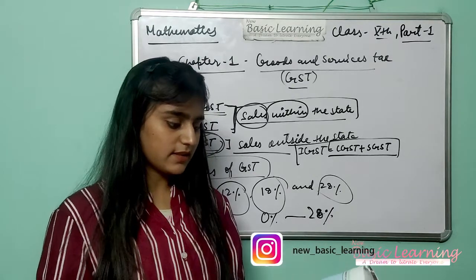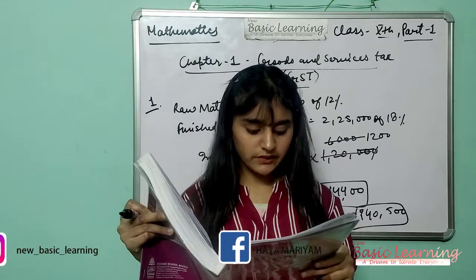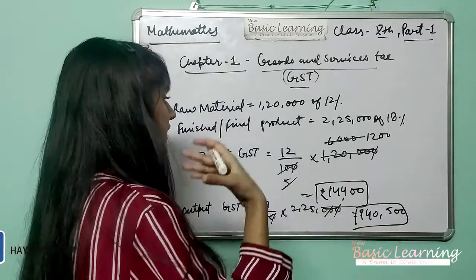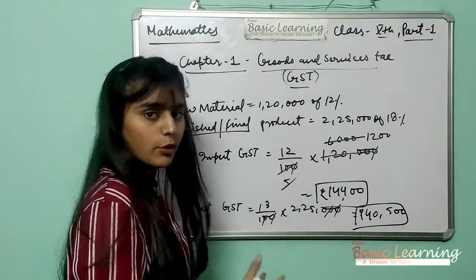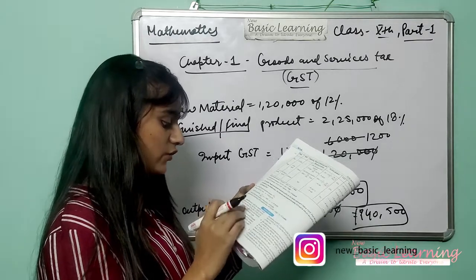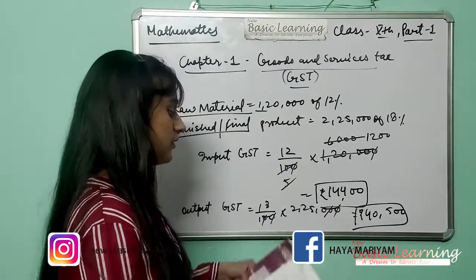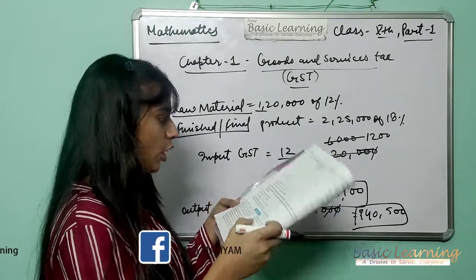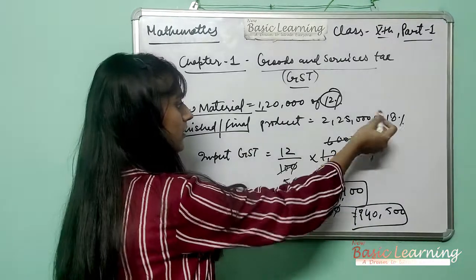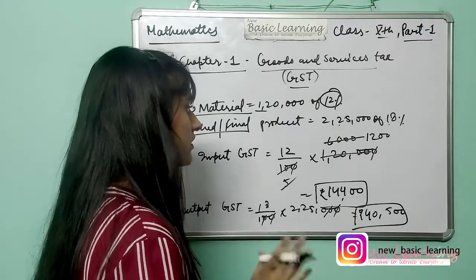The first question: Mr. Abdullah, a manufacturer, sells his finished product worth Rs. 2,25,000 within the state. He buys raw materials worth Rs. 1,20,000 within the state. The rate of GST is 12% on raw material and 18% on the finished product. We have to find the amount of GST he has to pay.